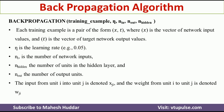ni is the number of network inputs. n_hidden is the number of units in the hidden layer. n_out is the number of output units. The input from unit i into unit j is denoted by xji in the backpropagation algorithm. Similarly, the weight from unit i to unit j is denoted as wji. We will see this when we construct a network in the next slide.